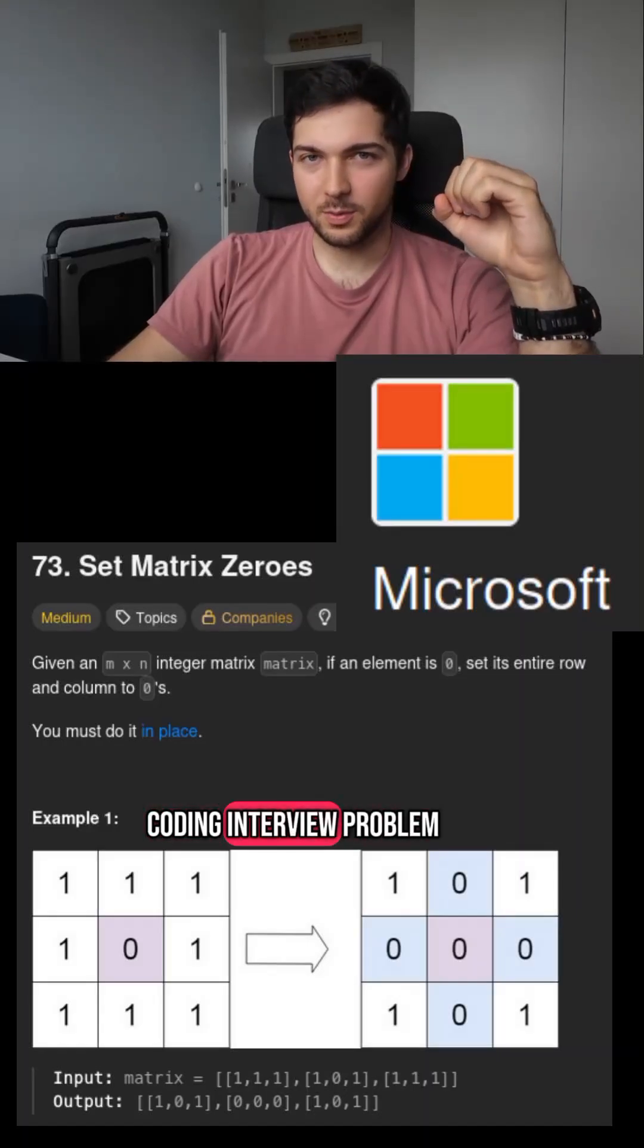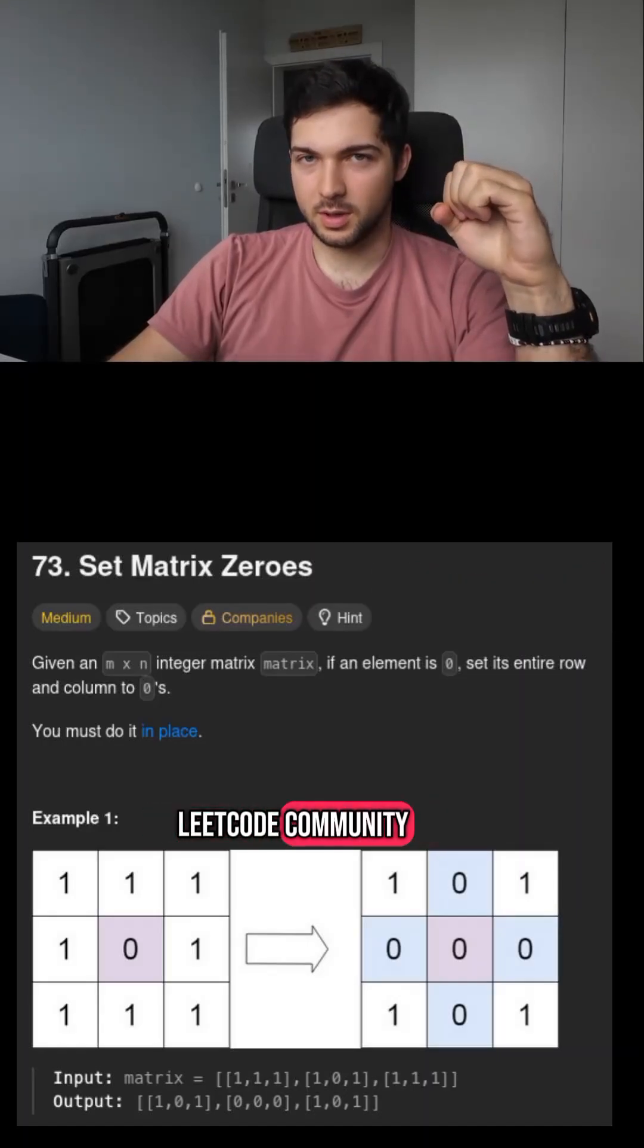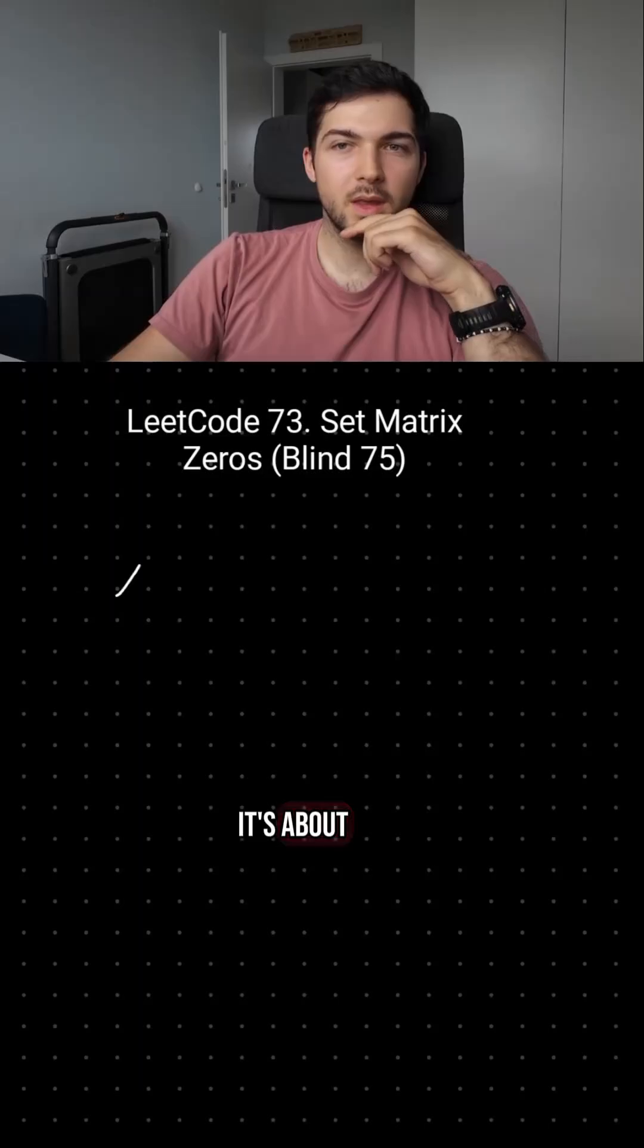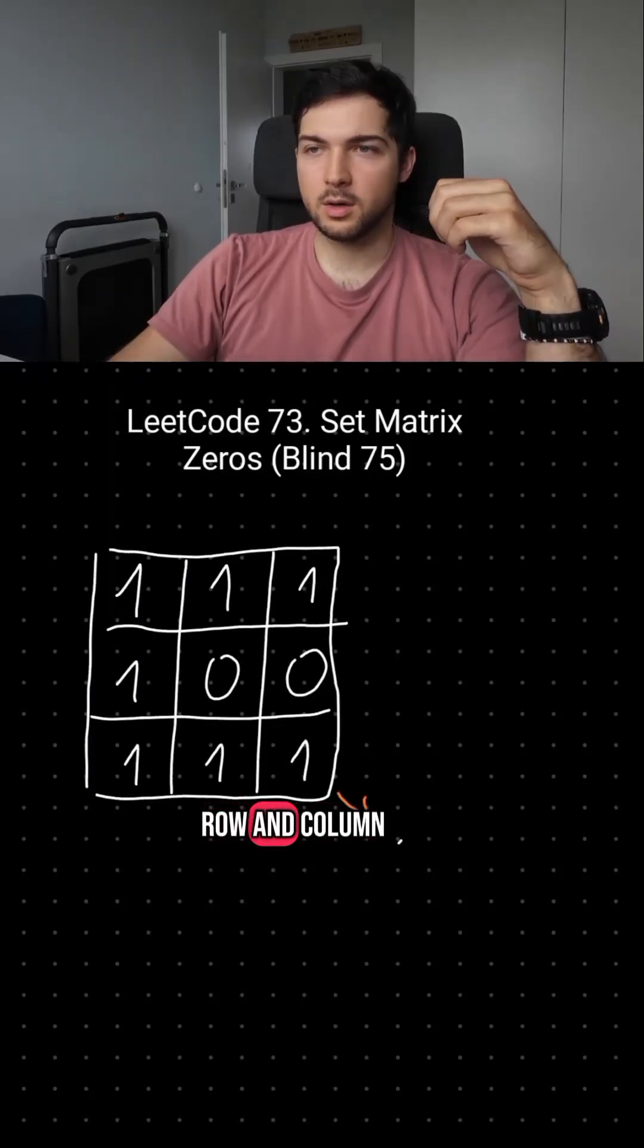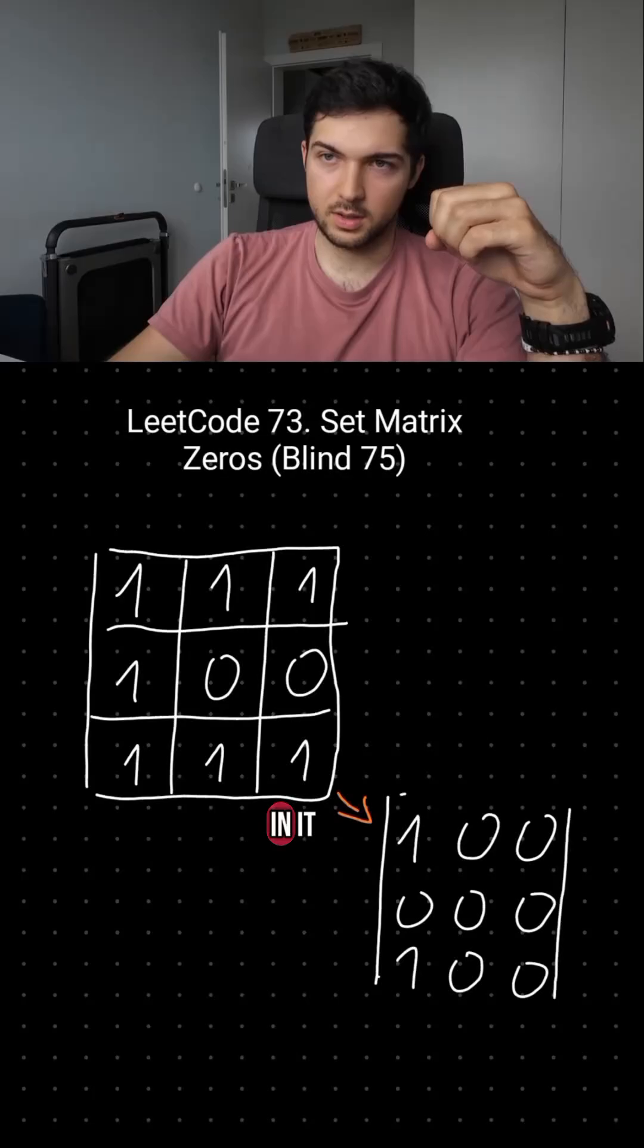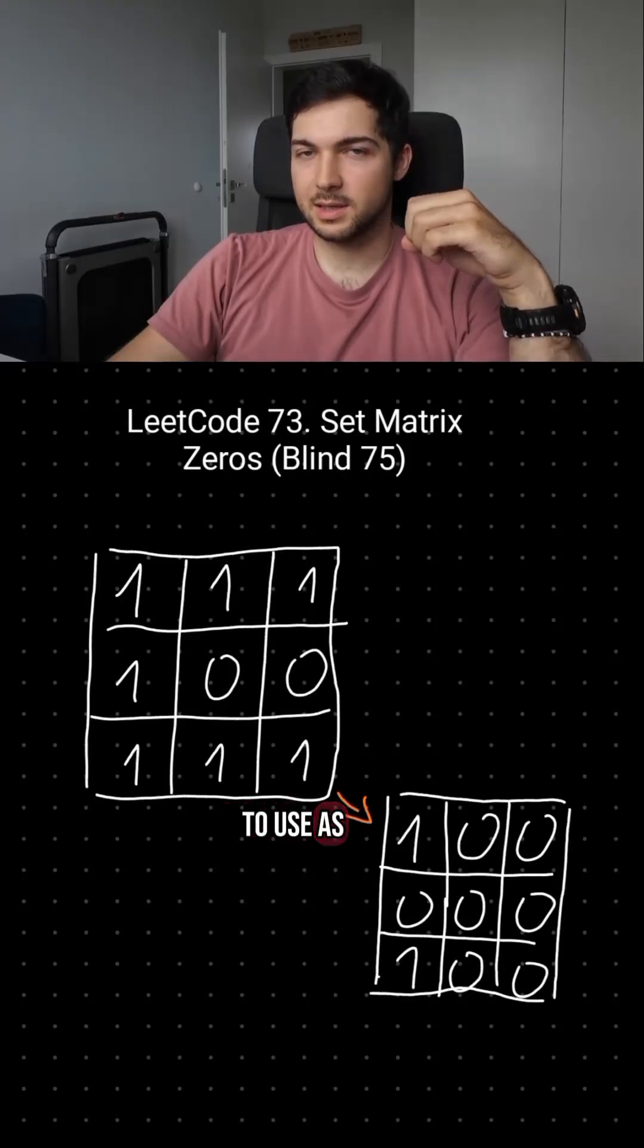Microsoft asked this coding interview problem according to the LeetCode community. Let's see what it's about. We have an integer matrix and we want to zero every row and column that has at least one zero in it. And we want to use as little memory as possible.